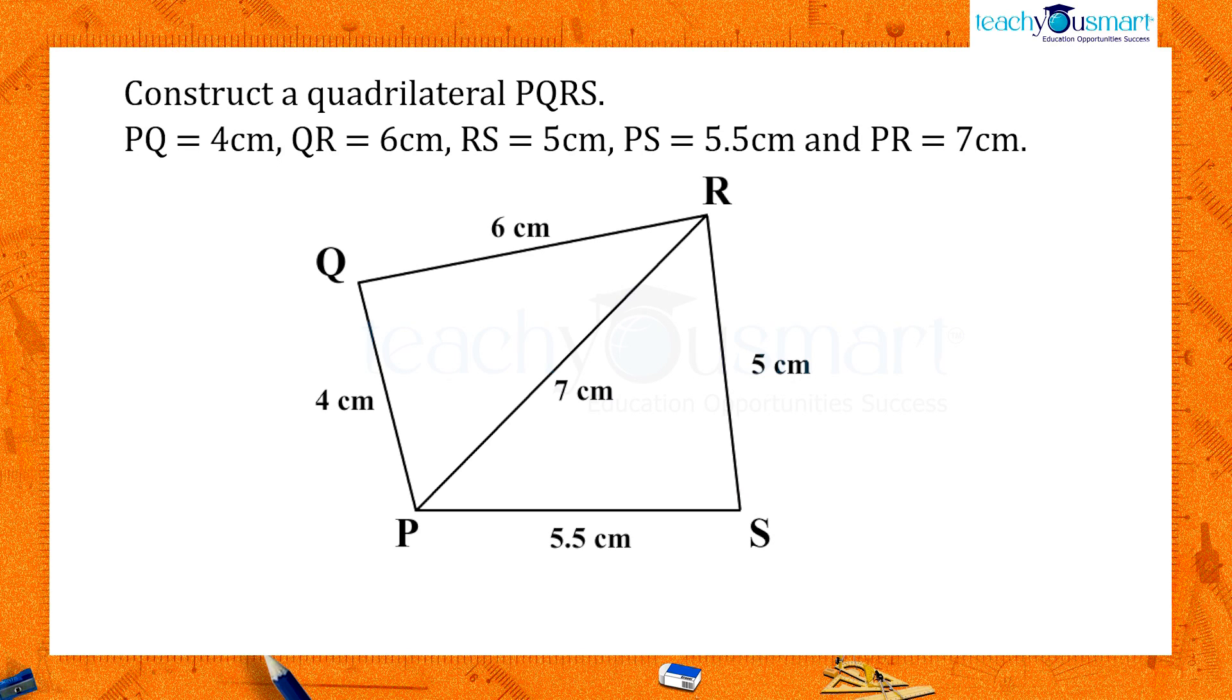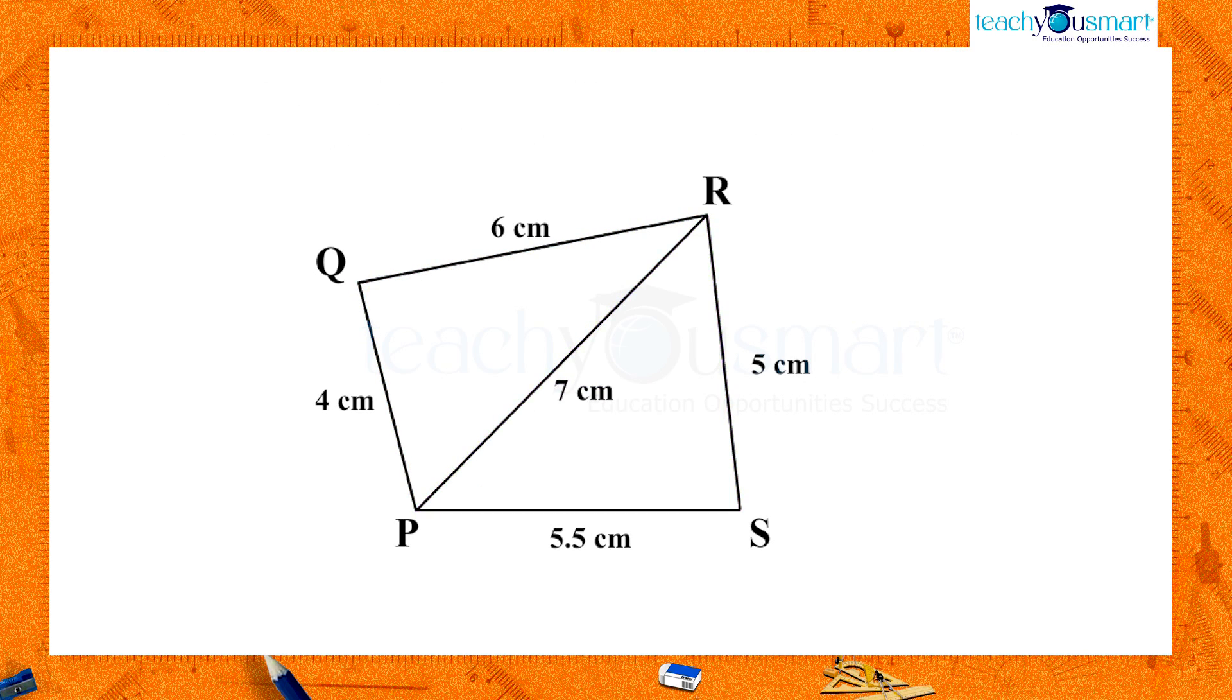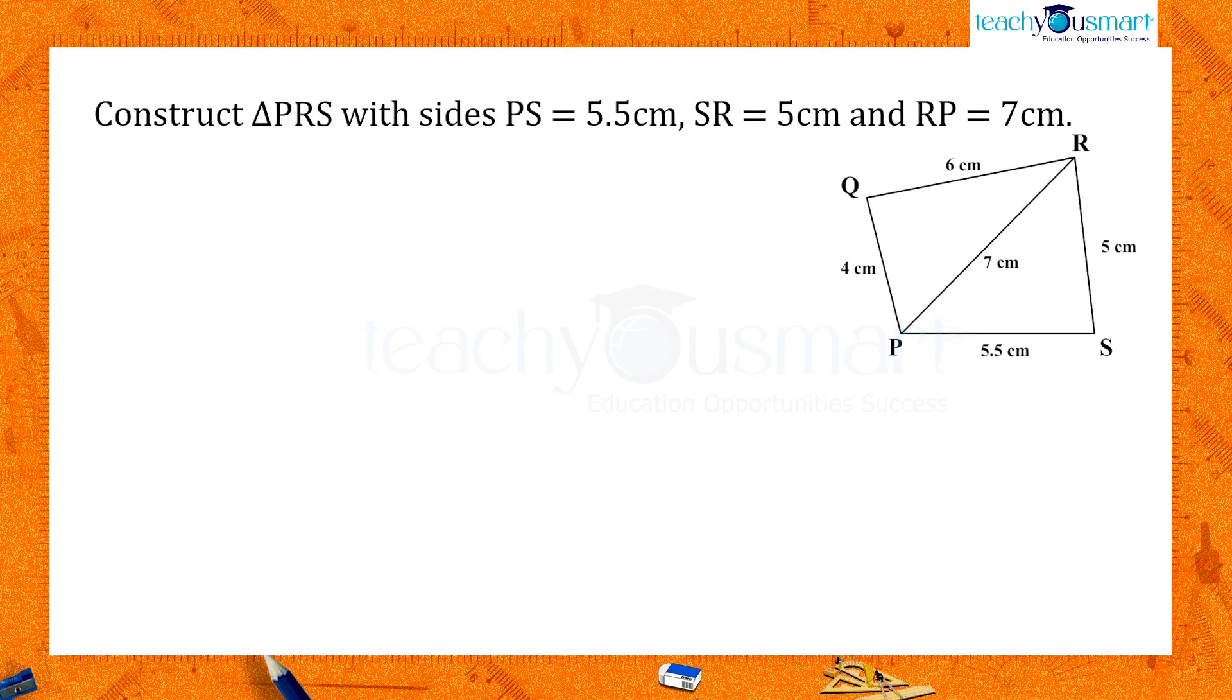To construct quadrilateral PQRS, we need to construct triangle PRS. Let's start the construction of triangle PRS with sides PS equals 5.5 centimeters, SR equals 5 centimeters, and RP equals 7 centimeters.